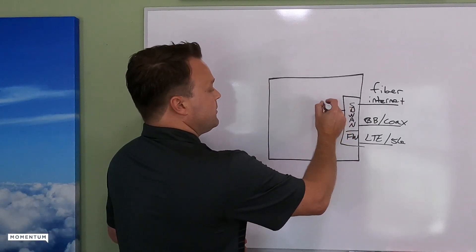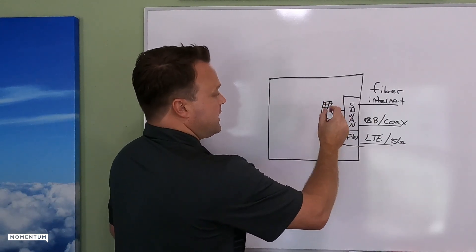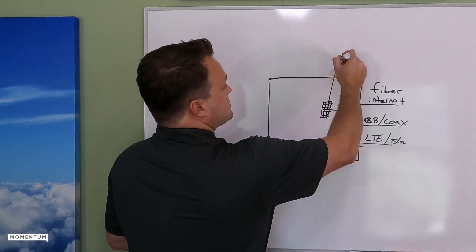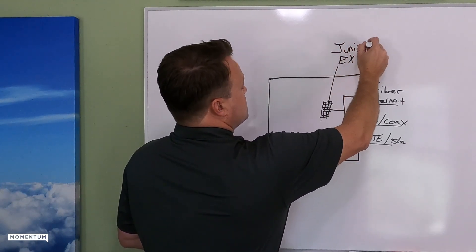From there, you're going to head over to a switch. So that's going to be a 48 or 24 port type switch. We're using the EX series with Juniper.